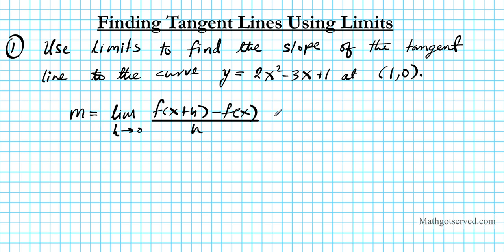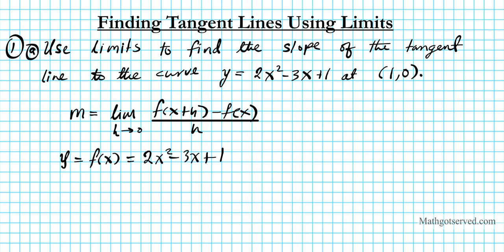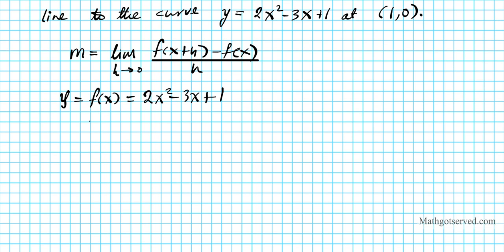This equation generates the slope at any point x, so when we fix x at a specific value, it tells us what the slope is. This formula gives us a slope function that can help us calculate the slope of the tangent line at any point. So let's apply this here. The function f of x is y, so y equals f of x equals 2x squared minus 3x plus 1. Now f of x plus h is what you get when you substitute x plus h for x in the equation — so 2 times (x plus h) squared minus 3 times (x plus h) plus 1.